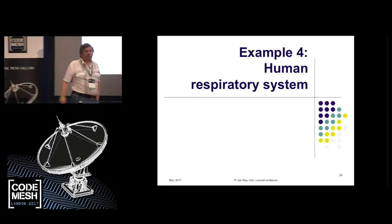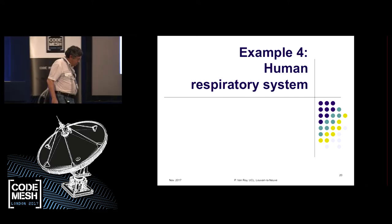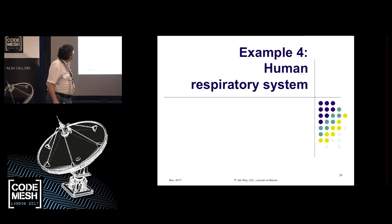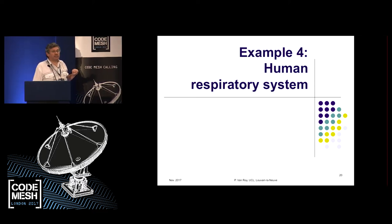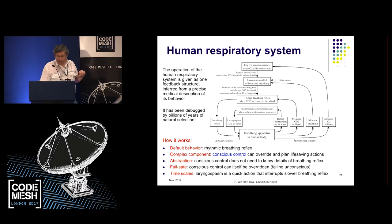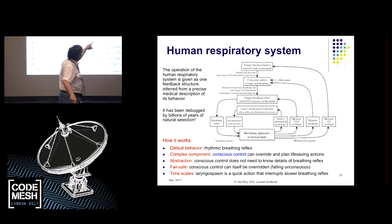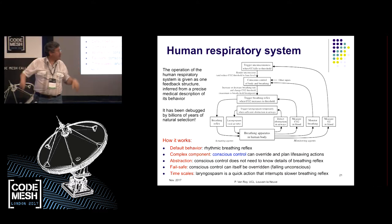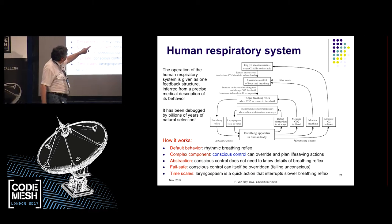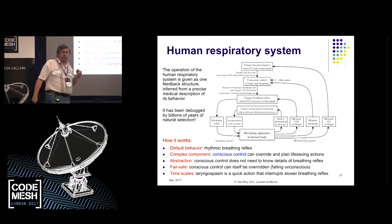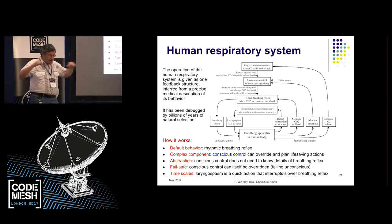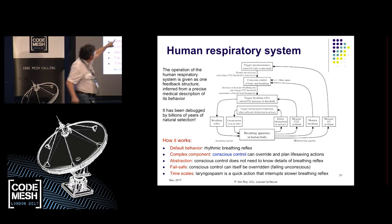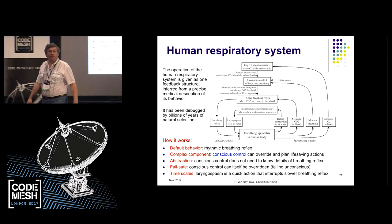Now let's do a more realistic example: the human respiratory system. In biological organisms there are huge numbers of examples. The human respiratory system has a set of feedback loops. The default behavior is a rhythmic breathing reflex — it measures CO2 in the blood. When CO2 reaches a certain level, it triggers the reflex. CO2 increases, hits the threshold, and you breathe. This is the automatic default behavior for the human respiratory system.